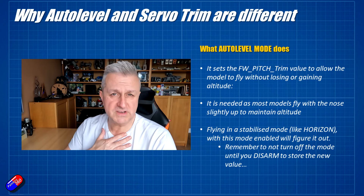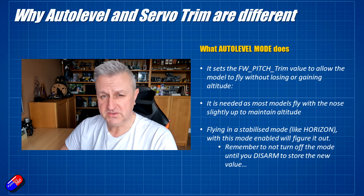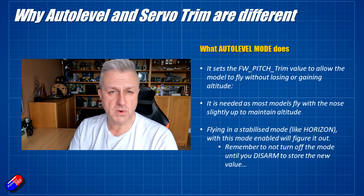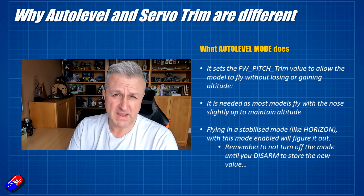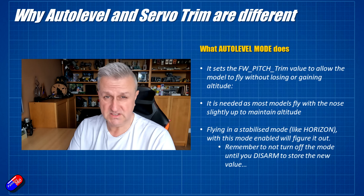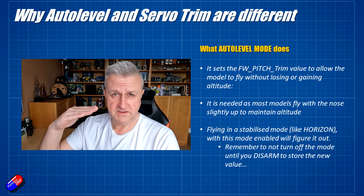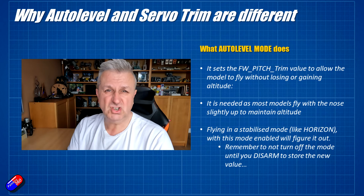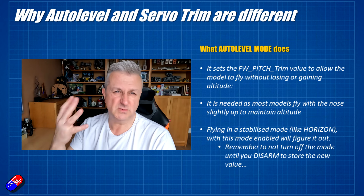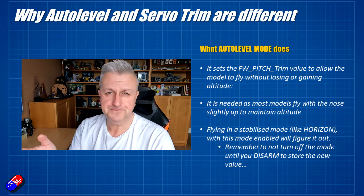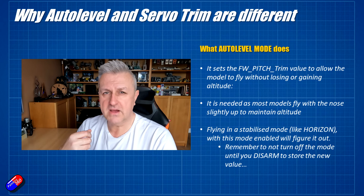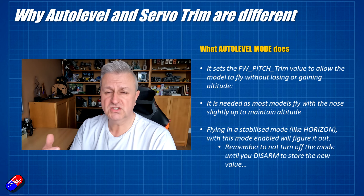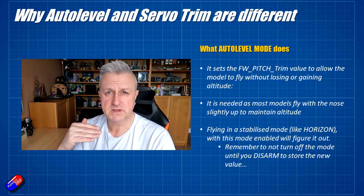In the very old series, you'll see me putting it into the command line interface for fixed-wing pitch trim, picking something between two and four degrees, flying the model, seeing if it was gaining or losing altitude, and adjusting it by a degree at a time until it was about right. However, in modern iNav, we don't have to do that iteratively — we can just tell the model to figure that out.